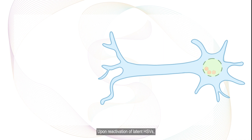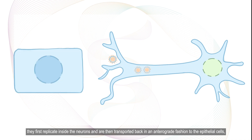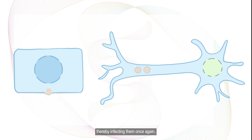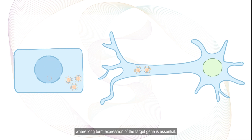Upon reactivation of latent HSVs, they first replicate inside the neurons and are then transported back in an anterograde fashion to the epithelial cells, thereby infecting them once again. These properties make HSVs an attractive choice for gene therapies targeting diseases such as Alzheimer's and Parkinson's, where long-term expression of the target gene is essential.